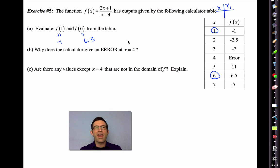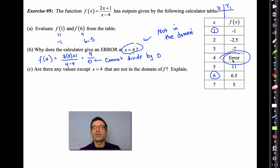Now letter B says why does the calculator give an error at x equals 4? Let's try to figure out what f(4) is. Well, the rule says 2 times 4 plus 1 divided by 4 minus 4. That's going to be 8 plus 1 is 9 in the top, and 4 minus 4 is 0. It may seem that 9 divided by 0 would be 0, but in fact, you cannot divide by 0. So that means x equals 4 is not in the domain. We can't come up with an output. That's why the calculator is giving us an error.